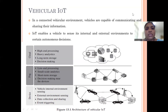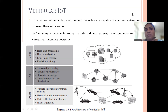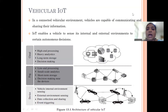In this video lecture we will see about Vehicular IoT, which is nothing but connected vehicles. In a connected vehicular environment, vehicles can communicate and share information among themselves. IoT helps the vehicle to sense both internal and external environments, from which autonomous decisions can be made. Autonomous vehicles that sense information and make decisions are one example of Vehicular IoT.